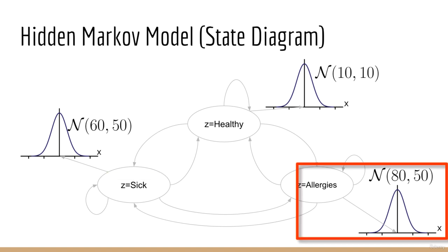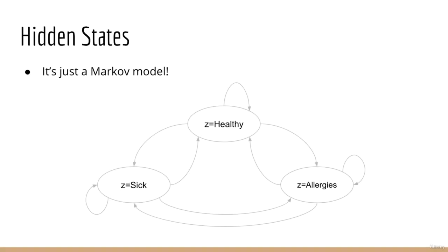Finally, in the allergies case, we have a Gaussian with mean 80 and variance 50. This means that on average, allergies give you more of a runny nose than having a cold. Also notice that I'm sticking to the convention that the observations are represented with the variable x and the hidden states are represented with the variable z.